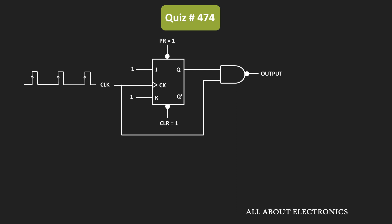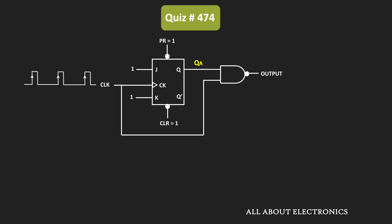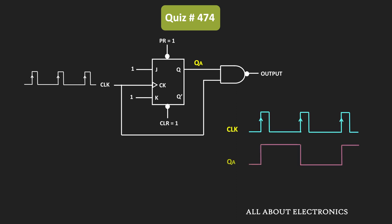This is the truth table of the JK flip-flop. When both J and K inputs are 1, the output of this JK flip-flop will toggle at every clock edge. Let's say the output of this flip-flop is equal to QA. When we apply clock pulses to the JK flip-flop, this QA output will change at every clock edge. This QA output and the clock pulses are applied to the NAND gate.